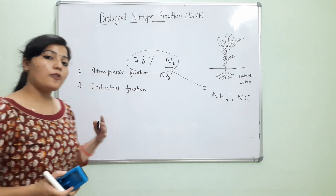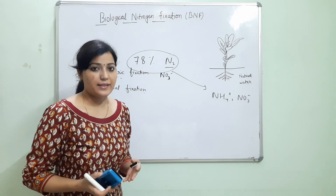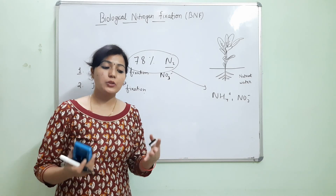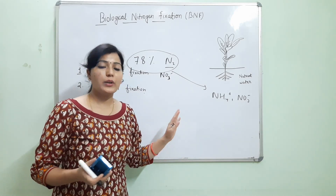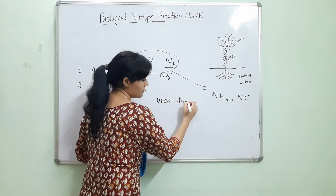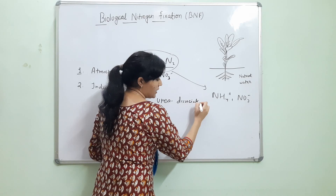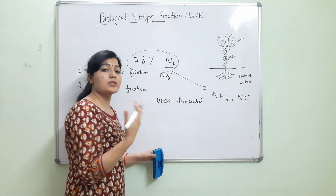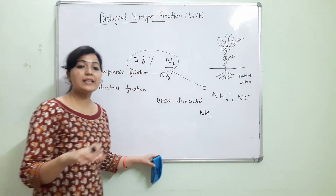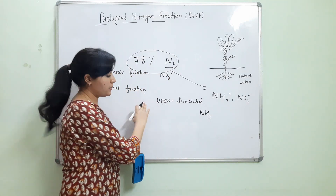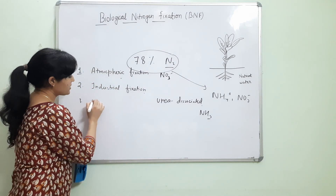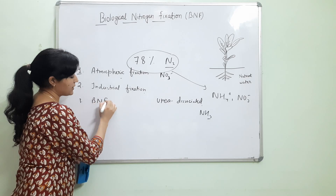Under the deficiency of any nutrient we supply fertilizer. The major source of nitrogen fertilizer is urea. When we apply urea in the field, urea dissociates and releases ammonia. So we can say industrial fixation releases the ammonium form into the soil. The third one is biological nitrogen fixation.